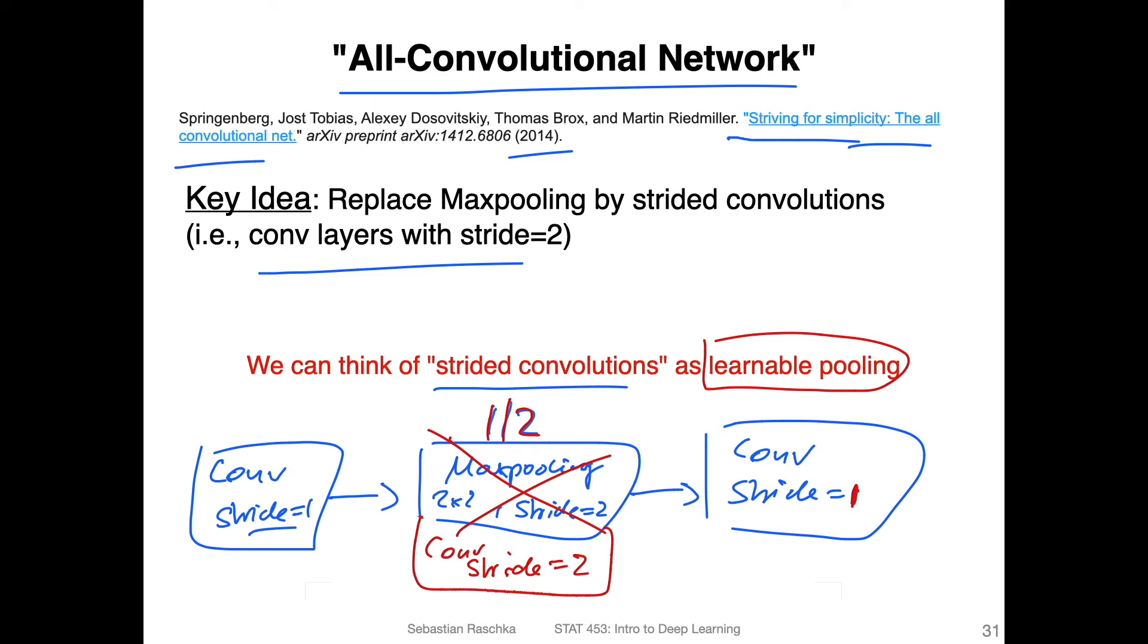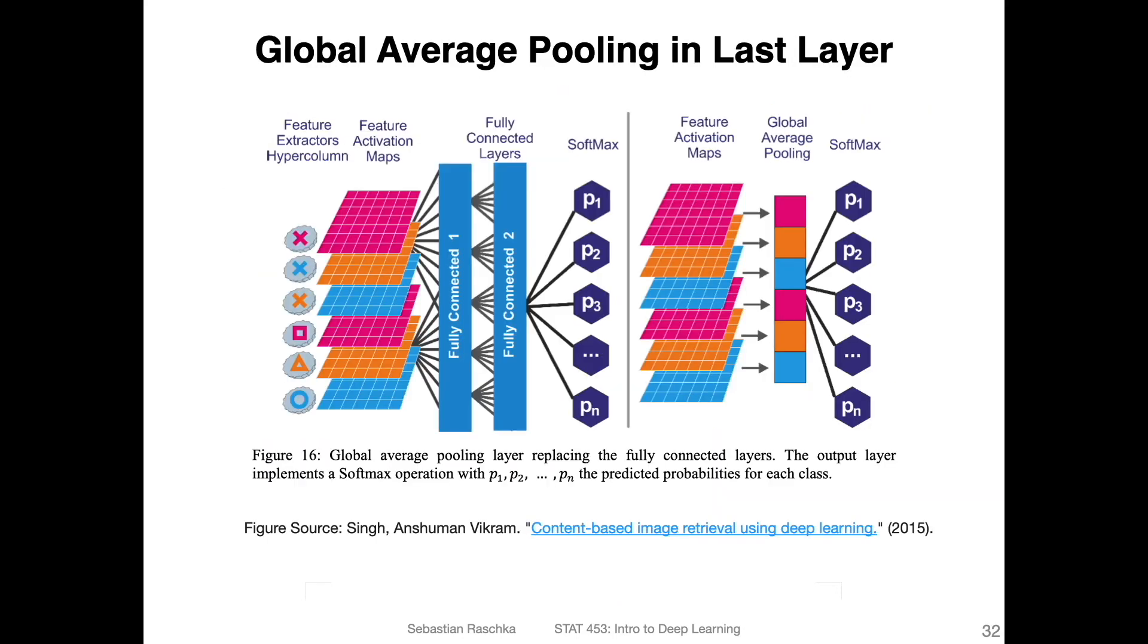And then talking about simplifying, you can also get rid of the fully connected layer using convolutions. I will talk more about that in the next video. And another way to get rid of fully connected layers is by using global average pooling.